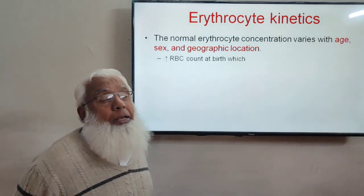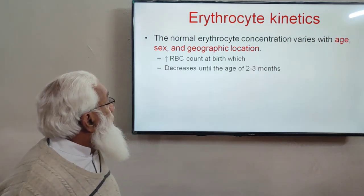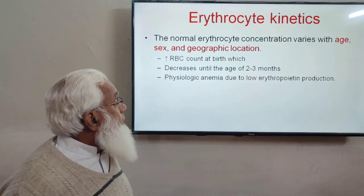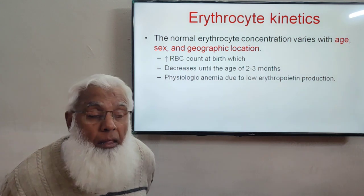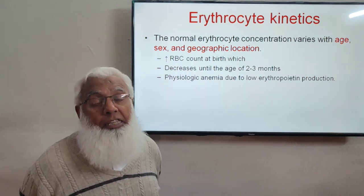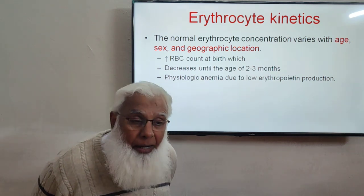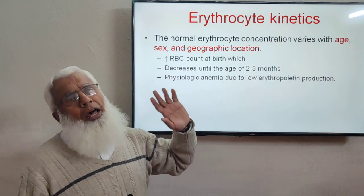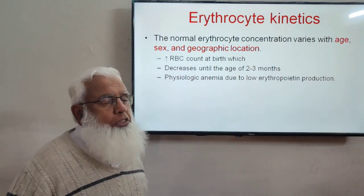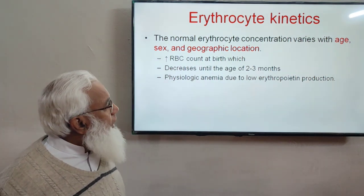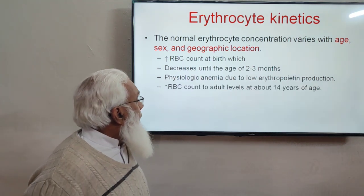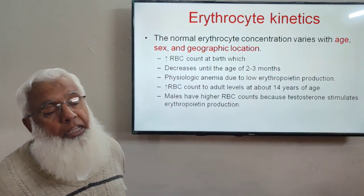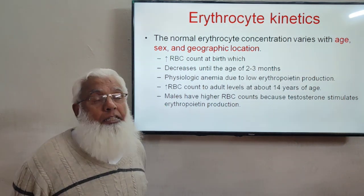Newborn babies have high RBC counts, which decrease over the next 2 to 3 months — this is known as physiological anemia. Newborns are very red with high hemoglobin, but gradually become pale over the next two months. This physiological anemia is due to low erythropoietin production. RBC counts then increase to adult levels around age 14. Males have higher RBC counts than females because of testosterone.